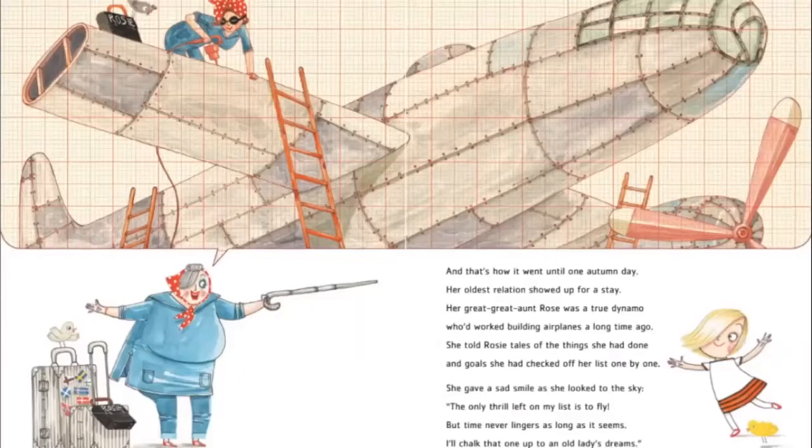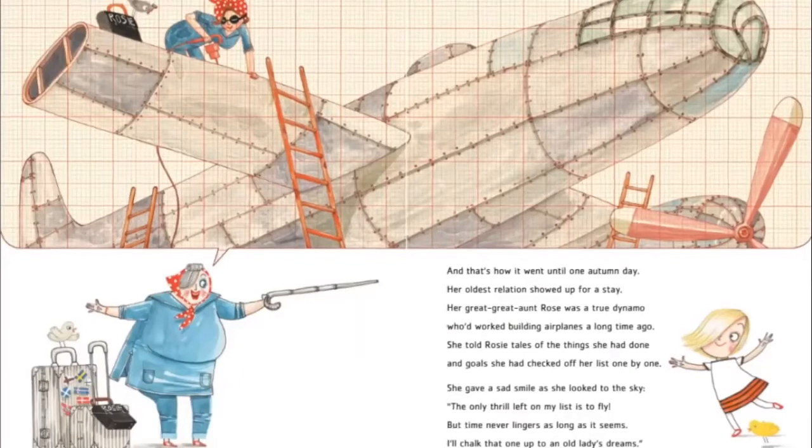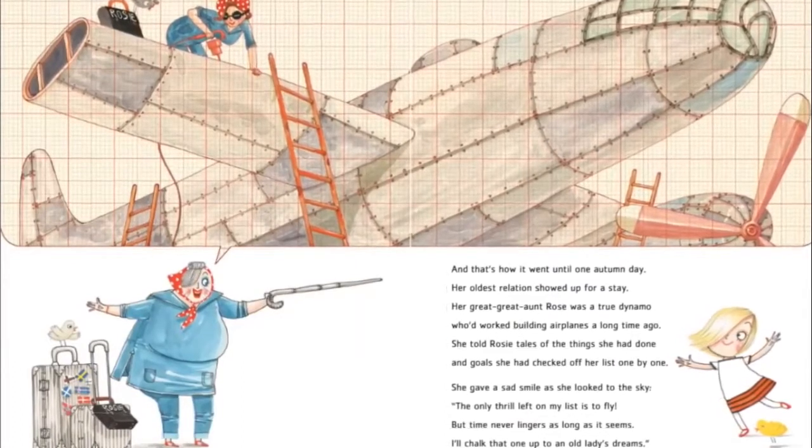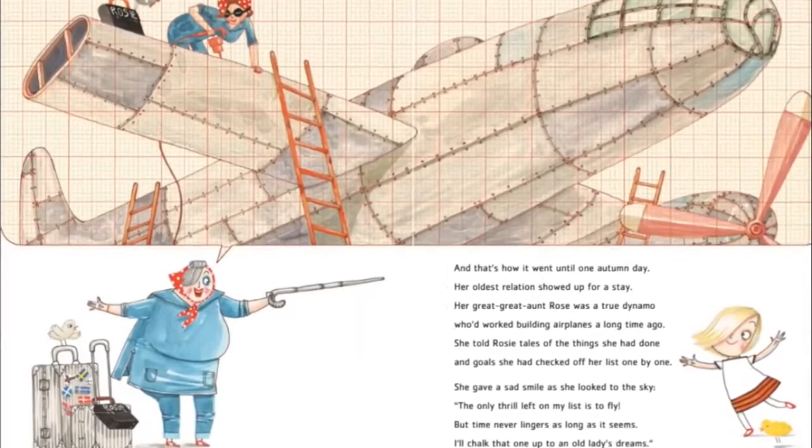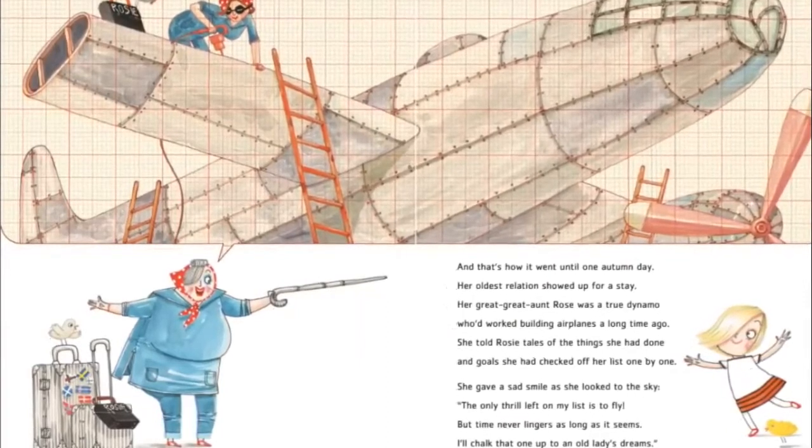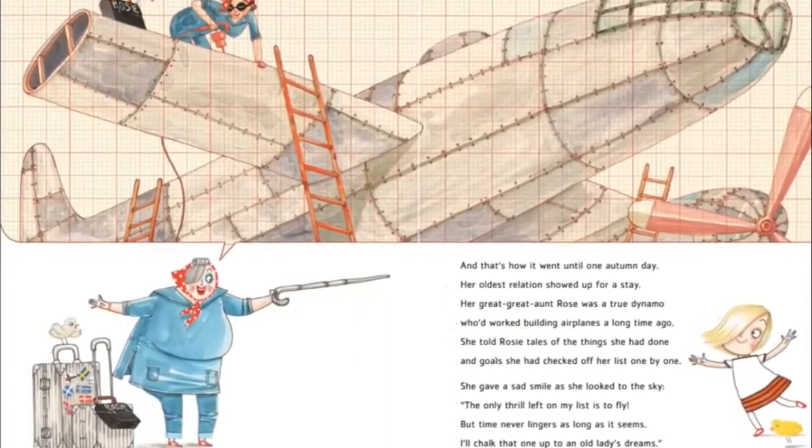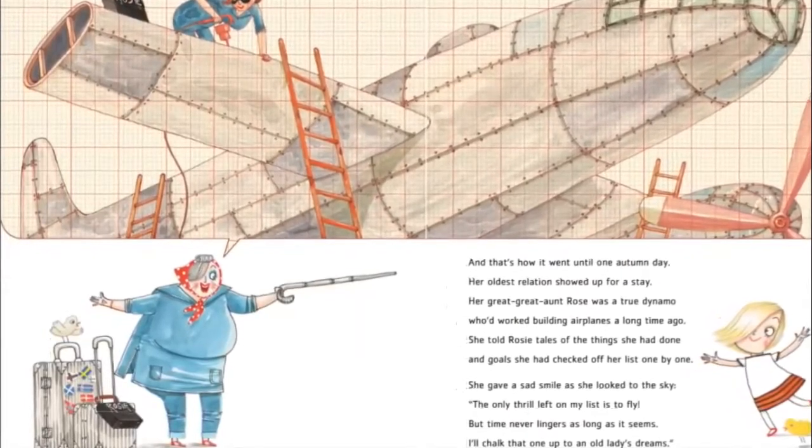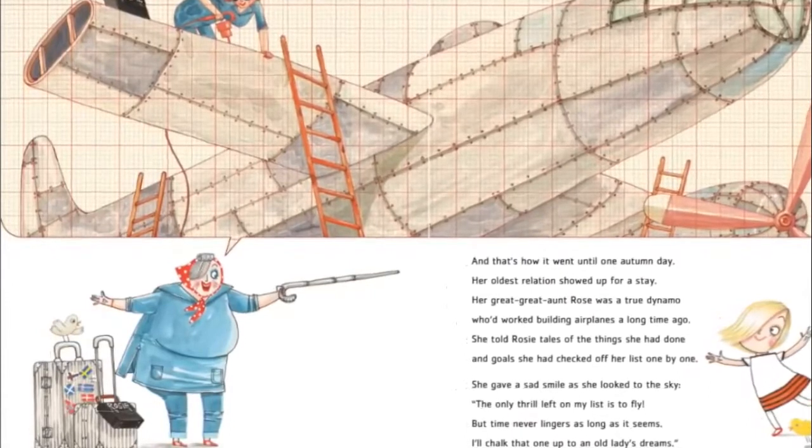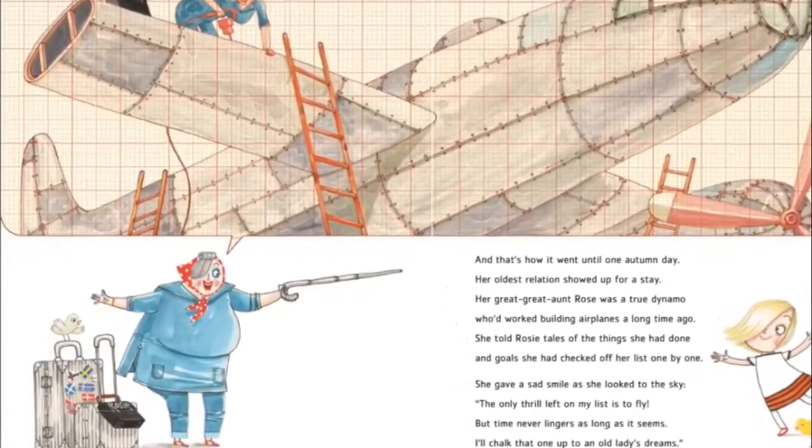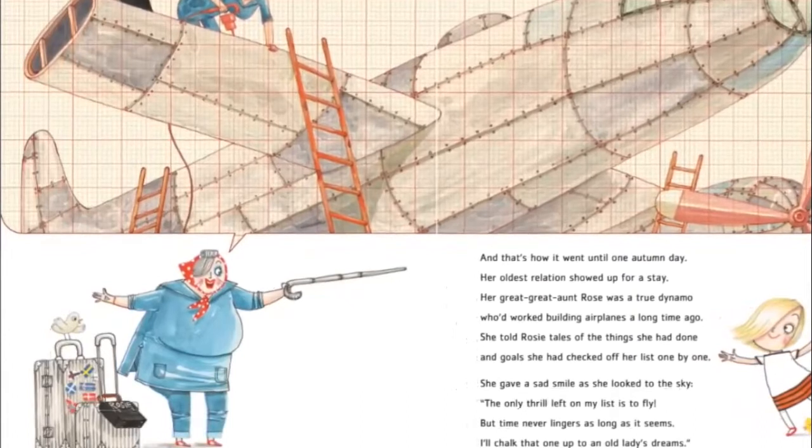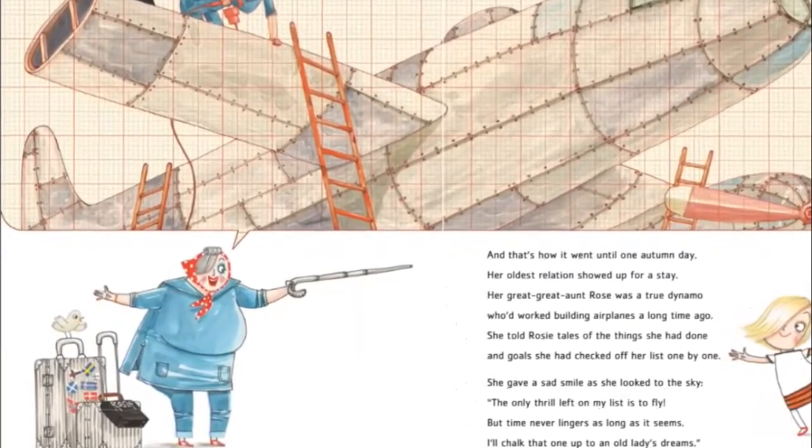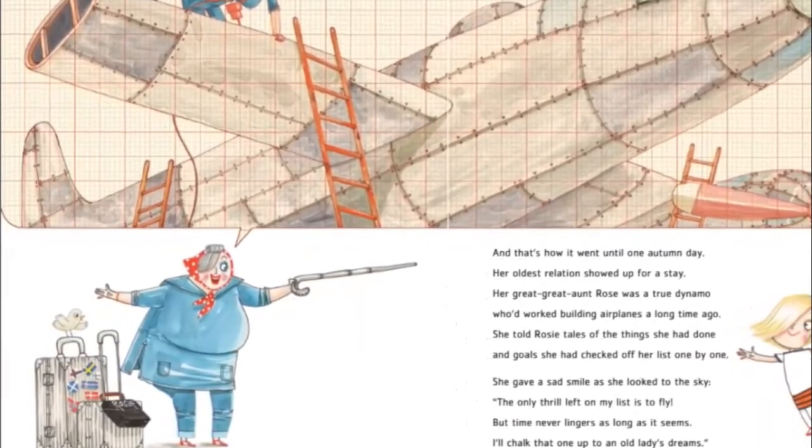And that's how it went until one autumn day. Her oldest relation showed up for a stay. Her great-great-aunt Rose was a true dynamo who worked building airplanes a long time ago.